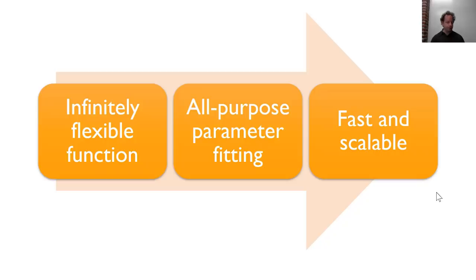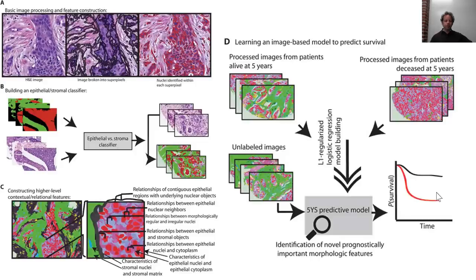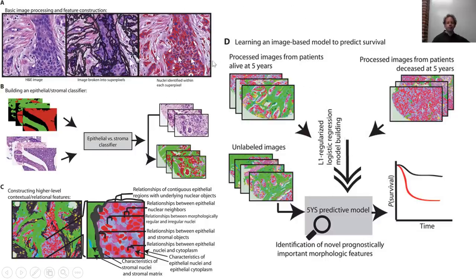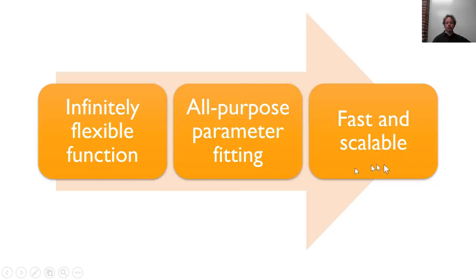We really want something better. Specifically, rather than a very specific function with all this domain-specific feature engineering, we want to create an infinitely flexible function — one that could solve any problem if you set its parameters correctly. Then we need an all-purpose way of setting those parameters that is fast and scalable. If we had something with these three things, we wouldn't need the incredibly time- and domain-knowledge-intensive approach anymore. The algorithm that has these three properties is called deep learning — or perhaps a class of algorithms.